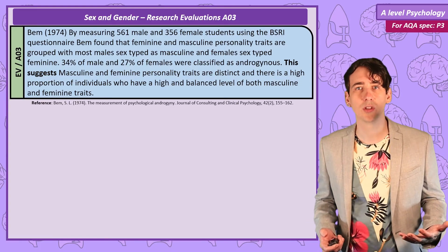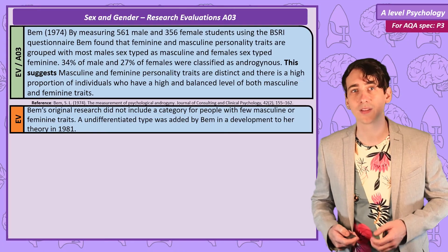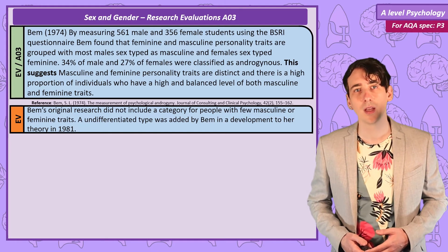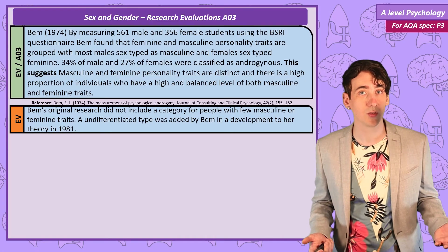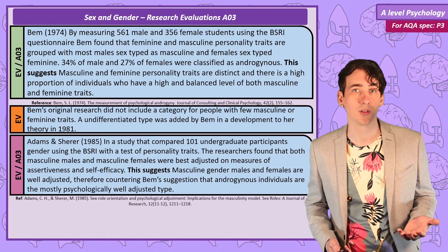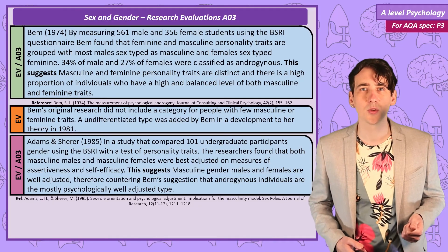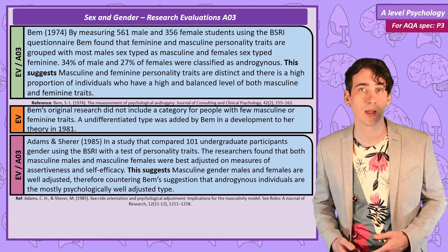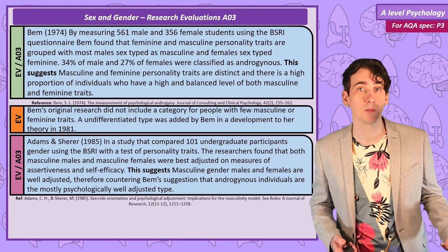One issue with Bem's original study was she didn't include a category for people with few feminine or masculine traits, but she did later update her model to include undifferentiated. Now Bem did claim that androgynous people were better adapted. Is there any evidence for that? Adams and Shearer used the BSRI on 101 university students alongside some other personality tests. What they actually found was that the more masculine males and females appeared to be best adjusted on a range of measures, including assertiveness and self-efficacy. Now obviously that counters Bem's theory.